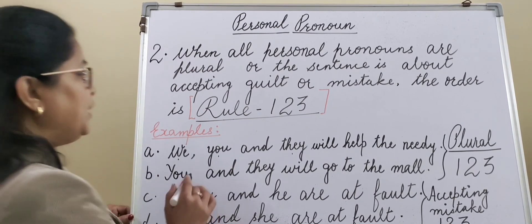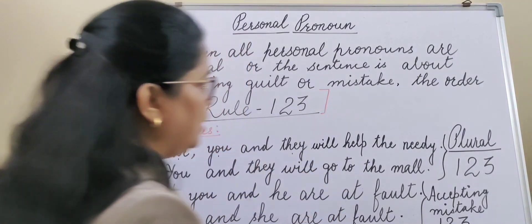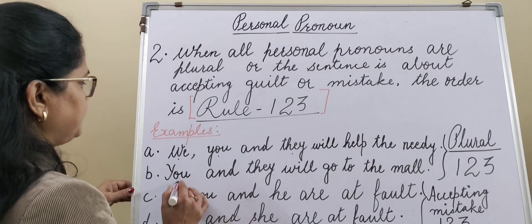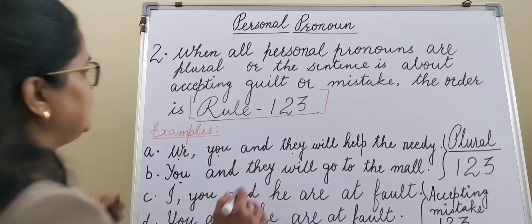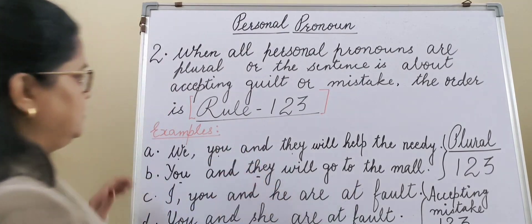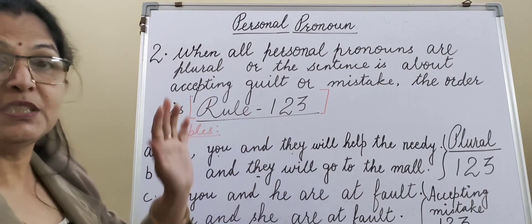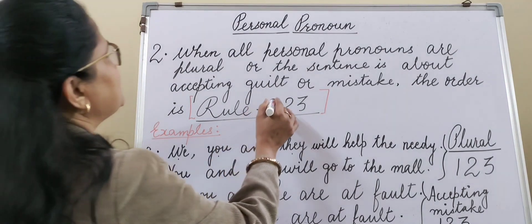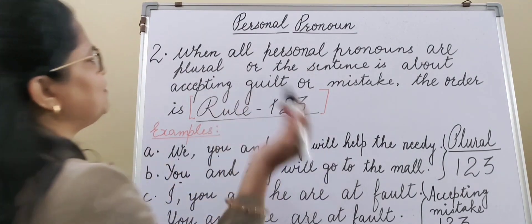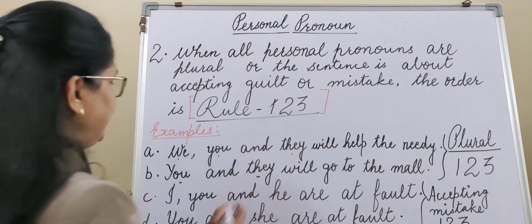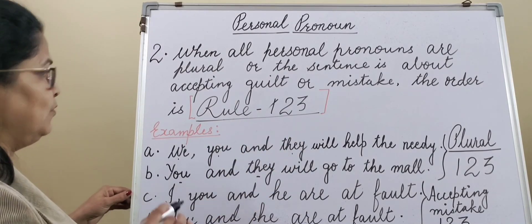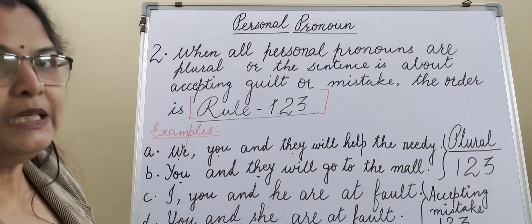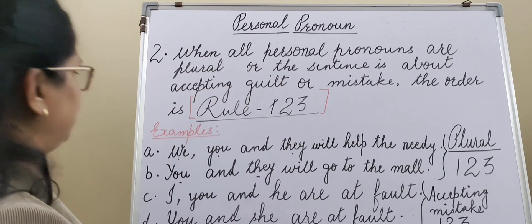Example B: 'You and they will go to the mall.' You and they — you, second person; they, third person. So here, first person is missing. You will cancel first person. But the order will remain second person and then third person. Why? Because both 'you' and 'they' are plural personal pronouns.